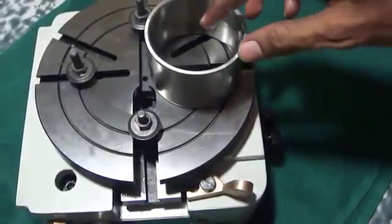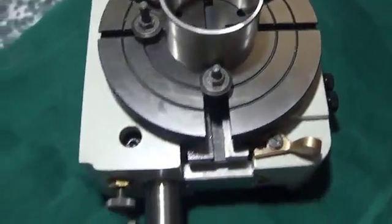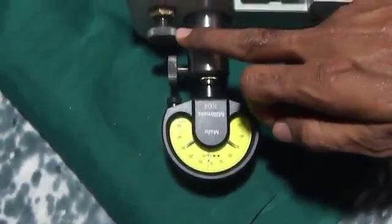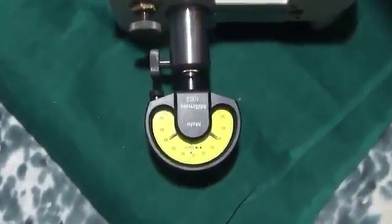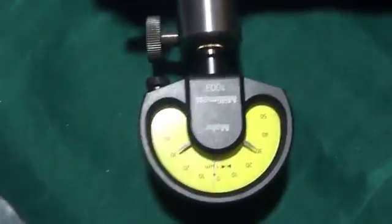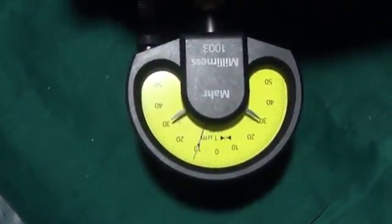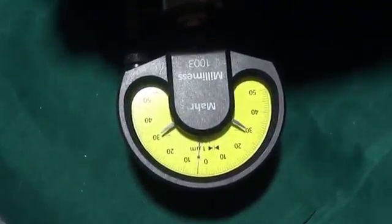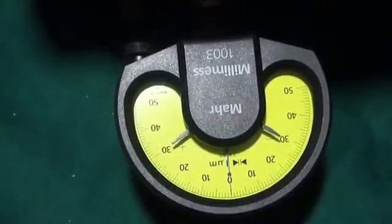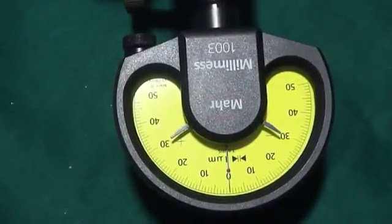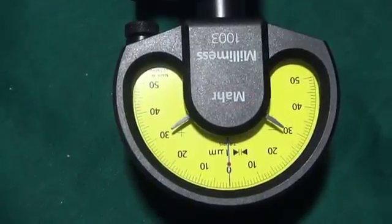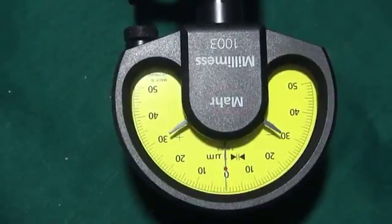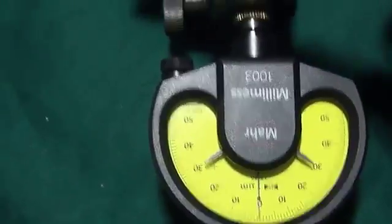Zero setting adjustment fine screw is given in this precise measuring instrument by which one can set 0 reading on dial indicator. Now, apply some pressure toward inside on job and set 0 reading on dial indicator by zero setting adjustment fine screw.